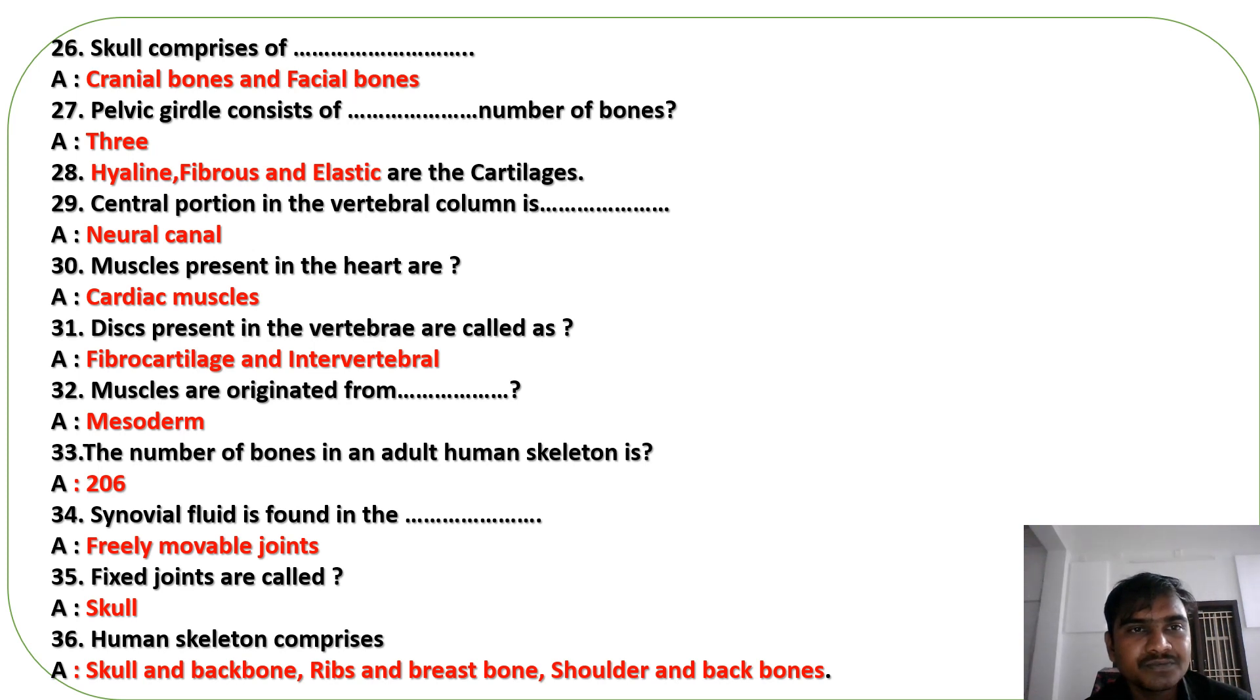Skull comprises of cranial bones and also facial bones. From 26th onwards, these bits are important. Skull comprises of cranial bones and facial bones. Pelvic girdle consists of three number of bones.